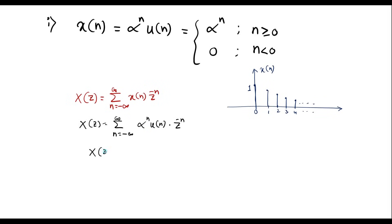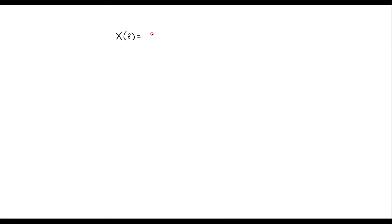I can write X of Z as the summation n equal to 0 to infinity, because if n is less than 0, the value will be 0. So we should consider n greater than or equal to 0, and the limit varies from n equal to 0 to infinity. This will be alpha^n times Z power minus n, or I can write this as X of Z equal to summation n equal to 0 to infinity of (alpha Z inverse) power n, which is the same as alpha power n times Z power minus n.